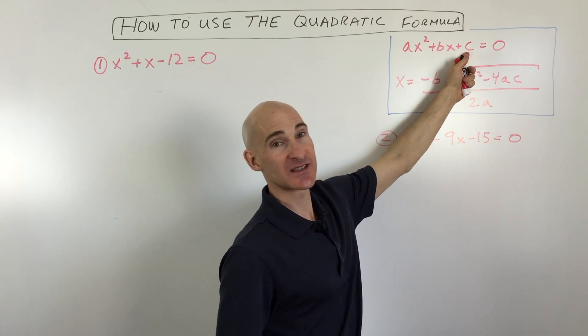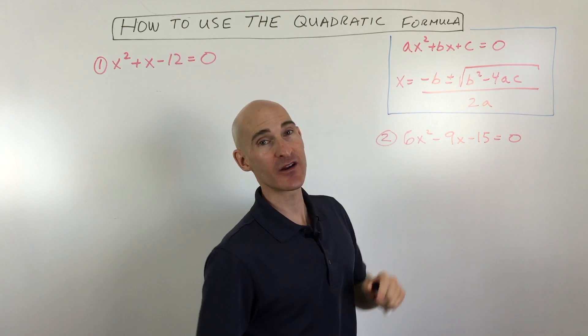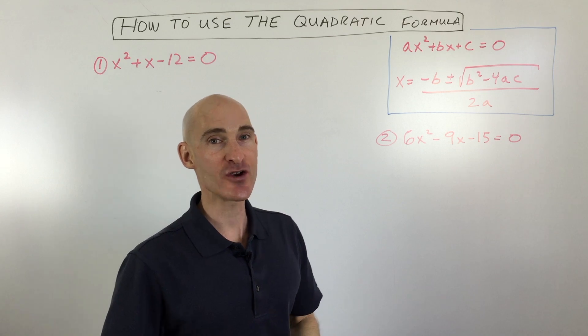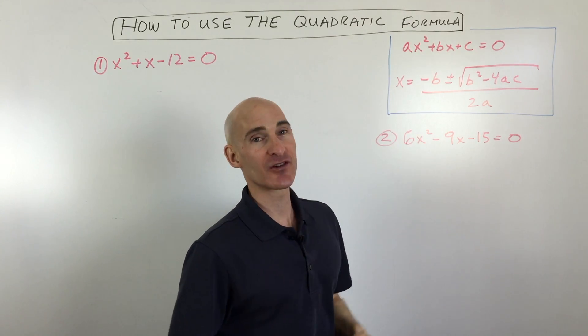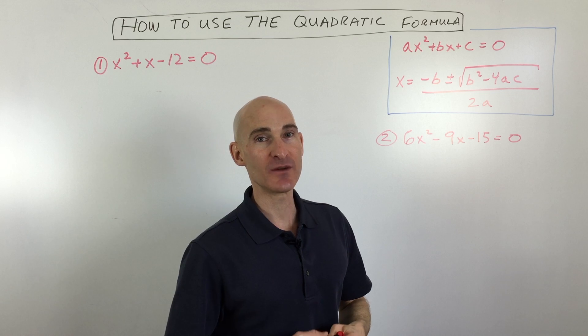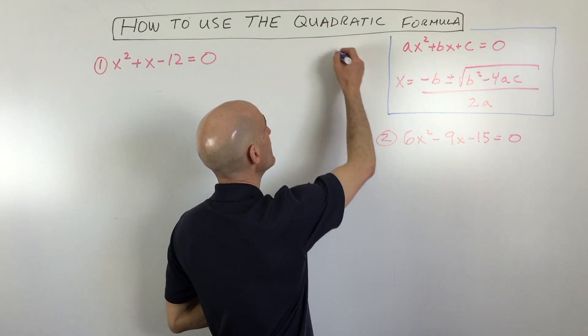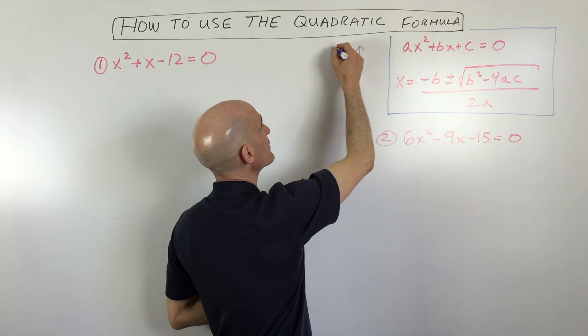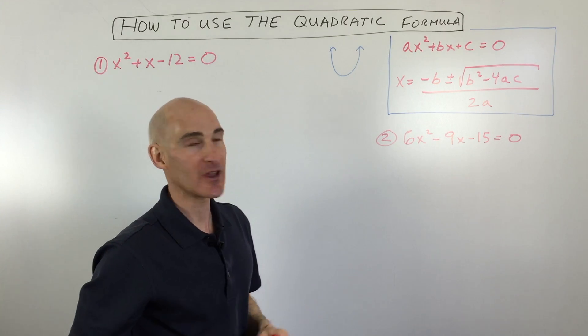ax squared plus bx plus c. So when you see that x squared as your highest powered term, that tells you that it's a quadratic or a second degree equation. And what those look like when you graph them is they look like parabolas. They look like these u-shaped graphs.